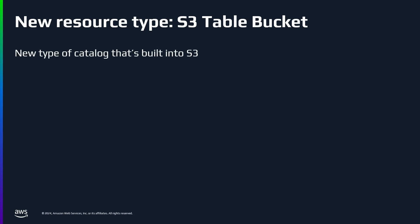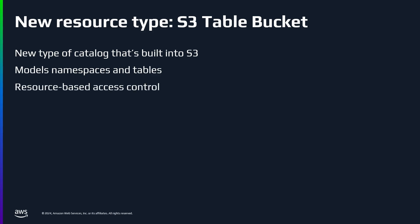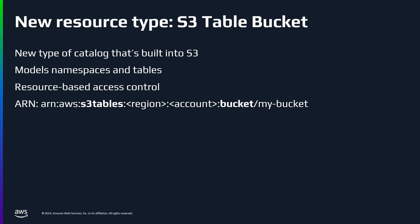We have a new thing called an S3 Table Bucket. What is it? It's basically a new type of catalog that's built into S3. Like any catalog, it models namespaces and tables. It has resource-based access control, and because of that, we have ARNs specifically for tables. It's Iceberg REST catalog compatible. The way to think about table buckets is as a lightweight catalog — the minimum you need to get Iceberg up and running.